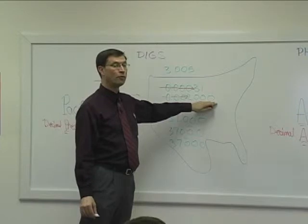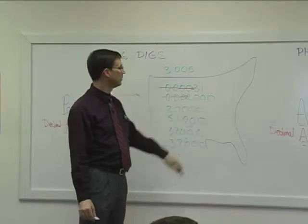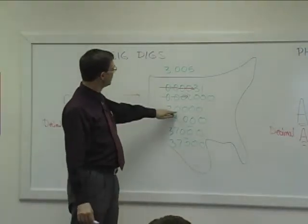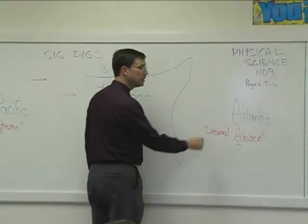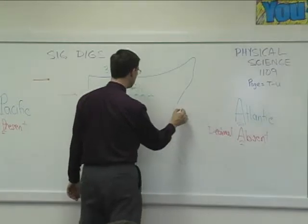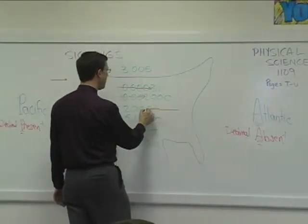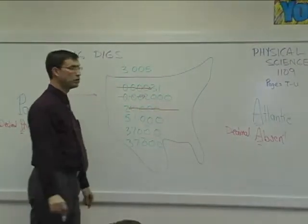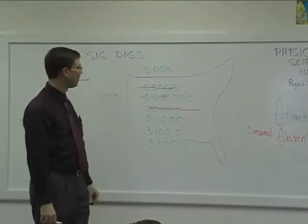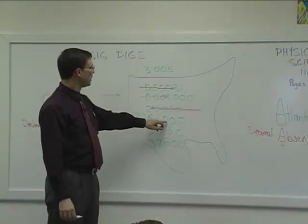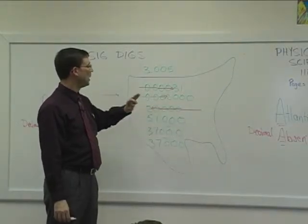We have four. All four of these then are considered significant figures. This one, there's no decimal present, so here it's coming from the Atlantic because the decimal is absent. Here it comes - pop, pop, pop, pop - and then it gets lodged, so we have one significant figure. This one we have three zeros on the right just like we did this one, but...